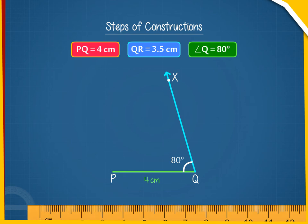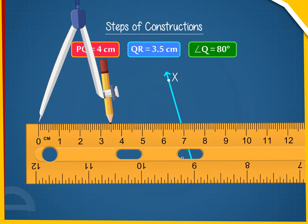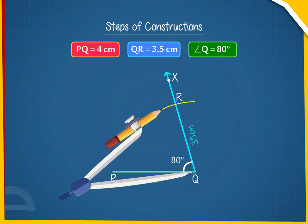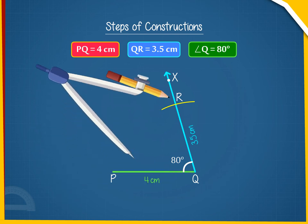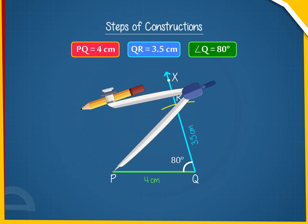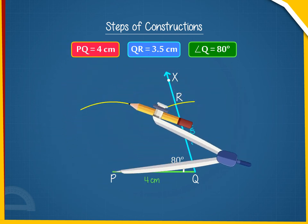C. Cut off QR equals to 3.5 cm along QX. D. Take P as center and radius 3.5 cm, draw an arc.